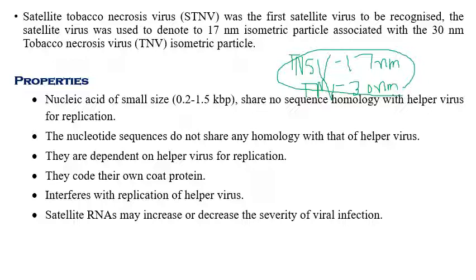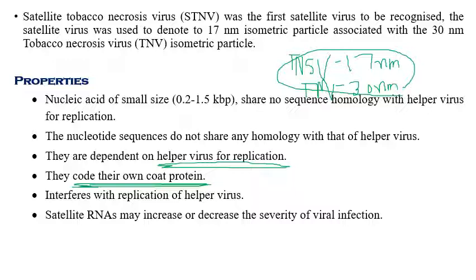Satellite viruses are dependent on the helper virus for replication and infection as described earlier. They are able to code their own coat protein. They also interfere with the replication of the helper virus, acting somewhat like a parasite.